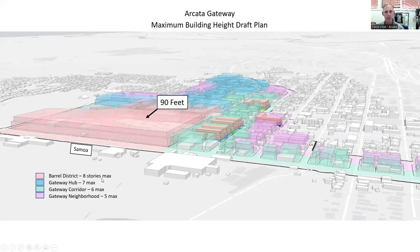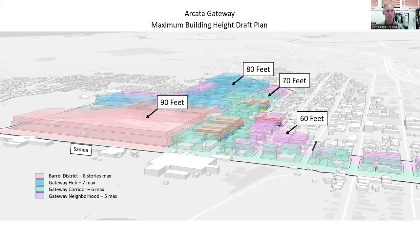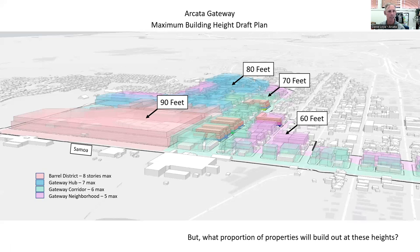What's currently proposed? In the Barrel District, eight stories maximum with a maximum of 90 feet. In the Hub, 80 feet maximum accommodating seven-story buildings. Corridor allows up to six stories with a 70-foot maximum. The Gateway Neighborhood transition zone allows 60 feet with a five-story max. But what proportion of those properties will actually build out at those densities? One big community concern is the thought of this entire area looking like the glass box vision — every property maximizing bulk and mass — but that's not a realistic expectation for development or for how codes would be implemented.